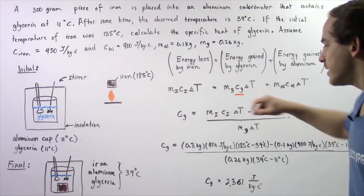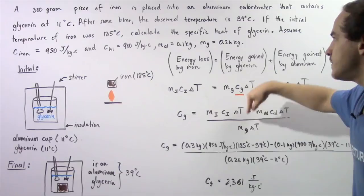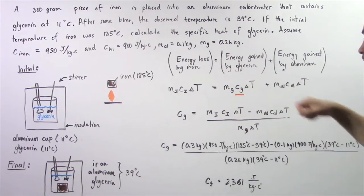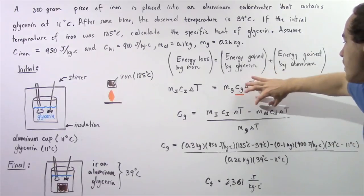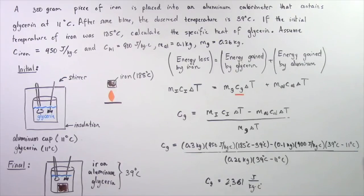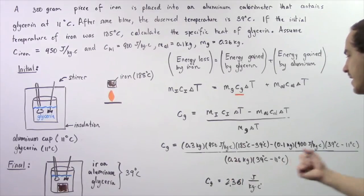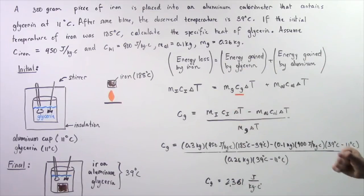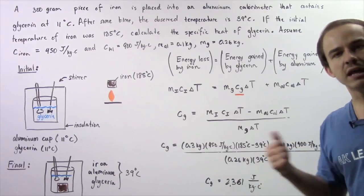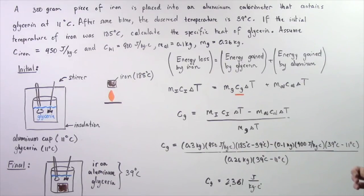The mass of the iron is 0.3 kilograms, the specific heat of iron is 450 joules per kilogram per Celsius, and the change in temperature of iron is 185 minus 39. The mass of the aluminum is 0.1 kilograms, the specific heat of aluminum is 900 joules per kilogram times Celsius, and the change in temperature of the aluminum is 39 minus 11 degrees Celsius. The denominator uses the mass of glycerin, 0.26 kilograms, multiplied by the change in temperature: 39 minus 11 degrees Celsius.